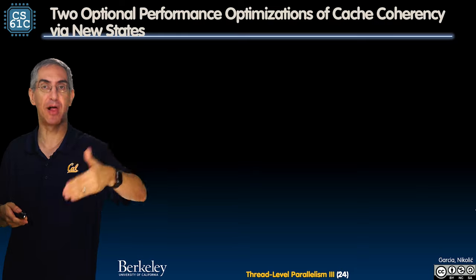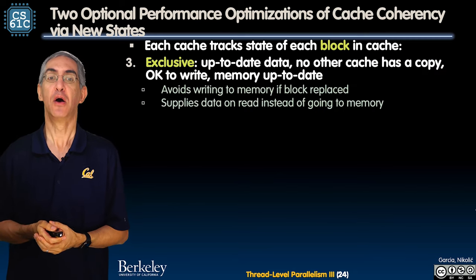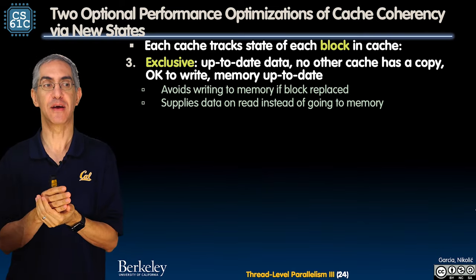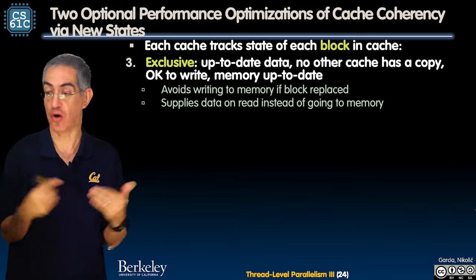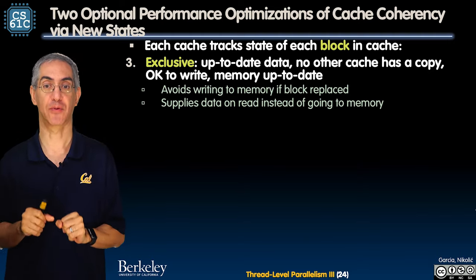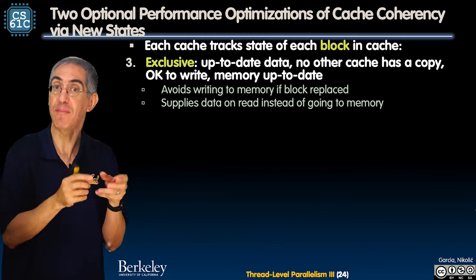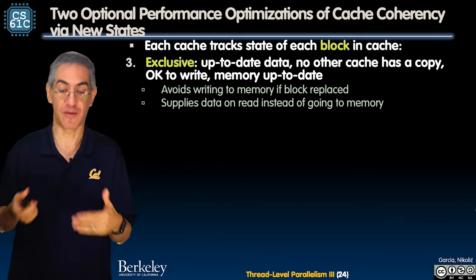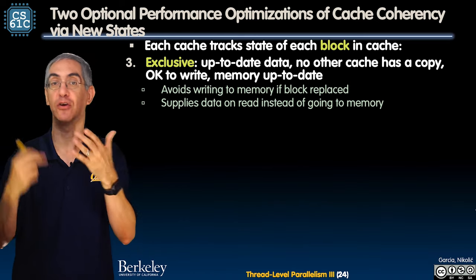This is on a block-by-block basis. There are two additional states for performance optimizations. Exclusive says it's similar to modified, but exclusive differs in that memory is up-to-date. If I'm exclusive, that means nobody else has a copy, and memory is up-to-date — whereas in modified, memory is not up-to-date. So if the block is replaced, I don't have to write to memory because my dirty bit is not flagged. Exclusive kind of replaces the dirty bit in that sense.